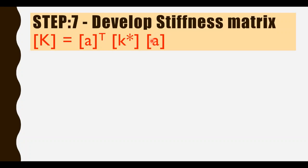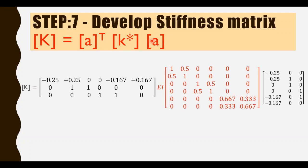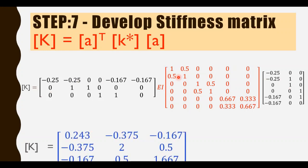For step seven, developing the global stiffness matrix, we use the equation K equals A transpose into K star into A. Multiplying all three matrices, the stiffness matrix values are: 0.243, minus 0.375, minus 0.167; minus 0.375, 2.5, 0.5; and minus 0.167, 0.5, 1.667. This is the stiffness matrix of the structure.